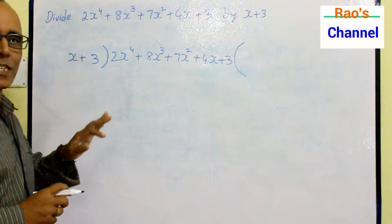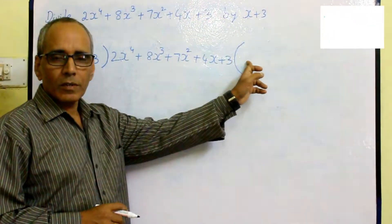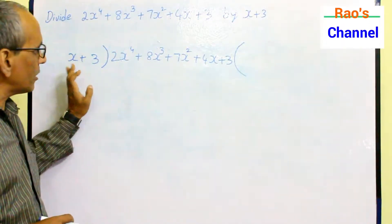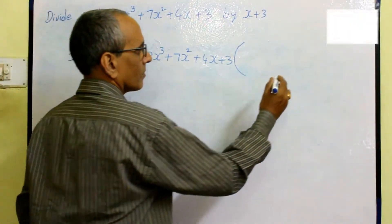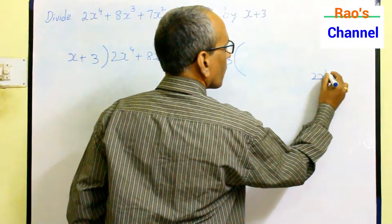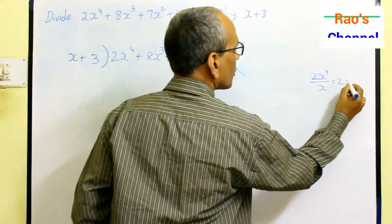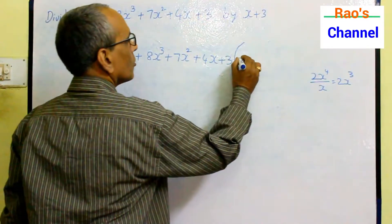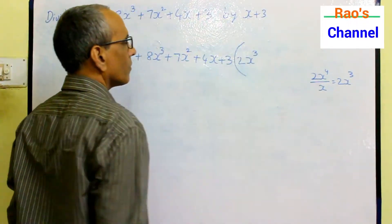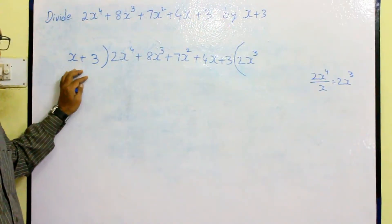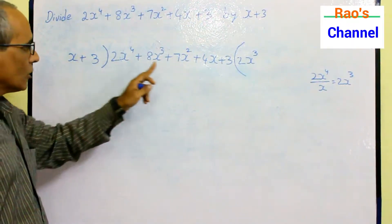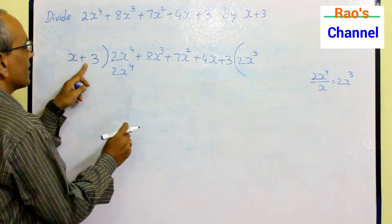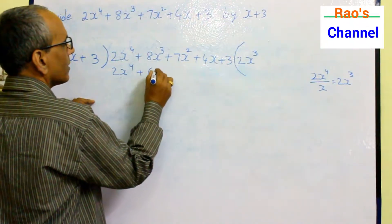To find the first term of the quotient, divide the first term of the dividend by the first term of the divisor. That means 2x⁴ divided by x gives 2x³. So 2x³ is the first term in the quotient. With this first term, you have to multiply the binomial. So x into 2x³ gives 2x⁴, plus 3 into 2x³ gives 6x³.